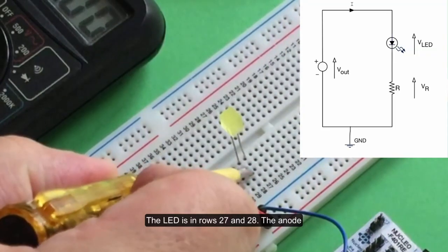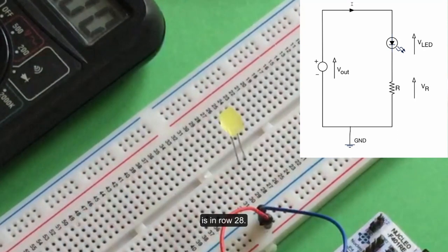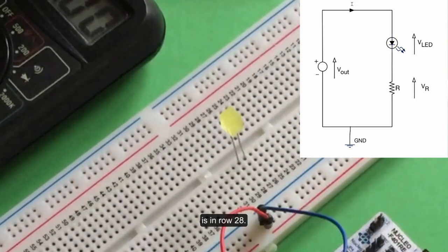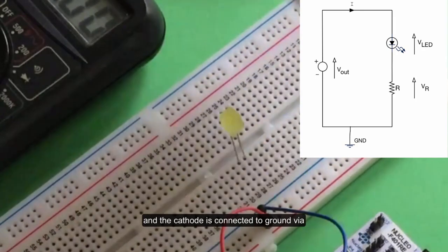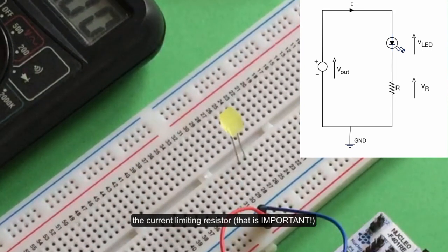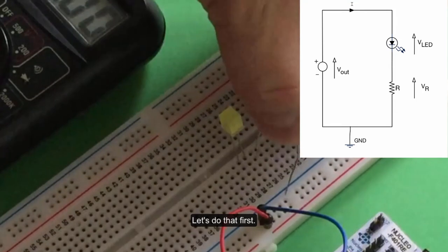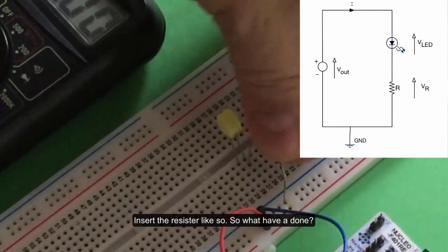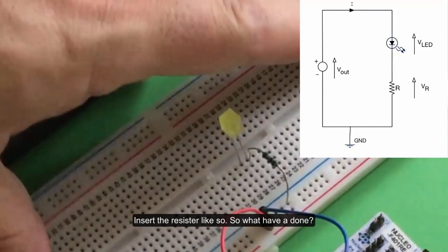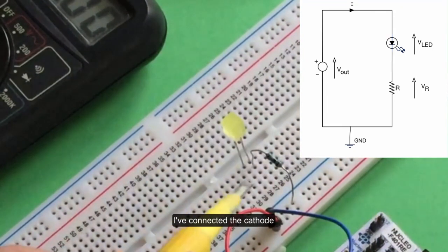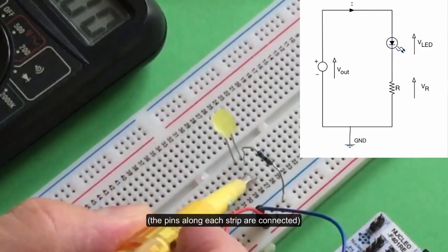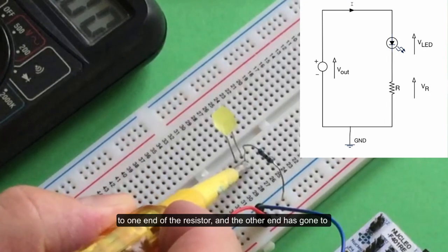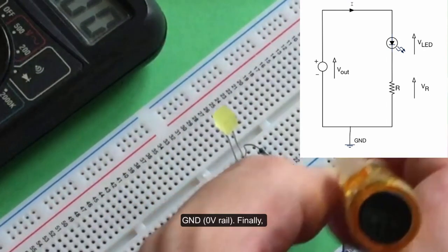I'm in rows 27 and 28, with my anode in row 28. I want to connect that to 3.3 volts and the cathode needs to go to ground via the current limiting resistor. So that's important. Let's do that bit first and put the resistor in there like that. I've connected the cathode - all these pins on this strip are connected here to one end of the resistor and the other end of the resistor has gone to the zero volt rail.